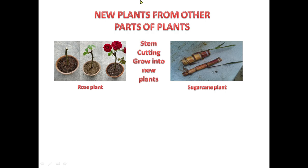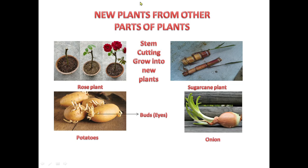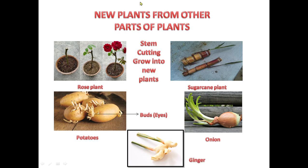Some vegetables can also be grown into new plants. These three vegetables — potato, onion, and ginger — have parts with buds or eyes which can be cut and used to grow new plants.